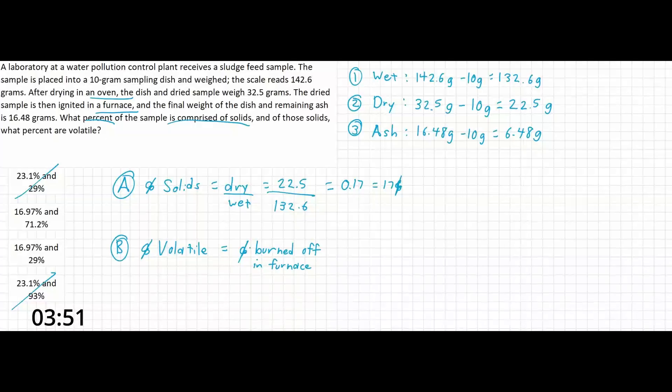So the way that we can write this up here is going to be the percent dry that went into the furnace, minus the ash remaining in the furnace, over the total weight of the dry going into the furnace. So this is going to be 22.5 minus 6.48 over 22.5.